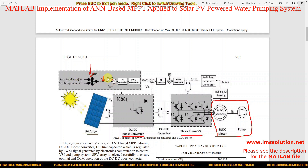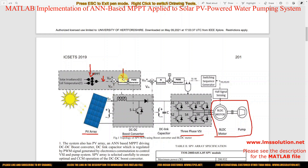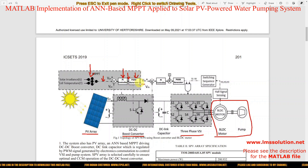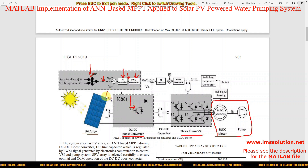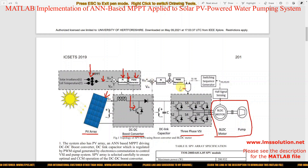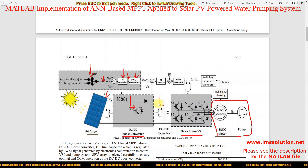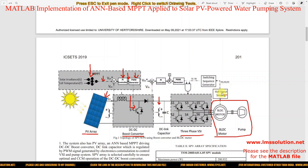We compare this reference voltage with the actual PV panel voltage, then process it via a PI controller. The PI controller generates the duty cycle, and the duty cycle is processed by a PWM generator. The PWM generator generates the pulse for the IGBT or MOSFET to extract the maximum power from the PV panel. In the next stage, we control the BLDC motor based on the hall sensor and DC link voltage.